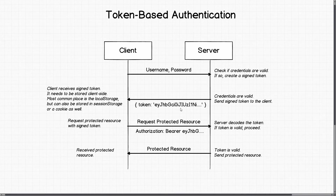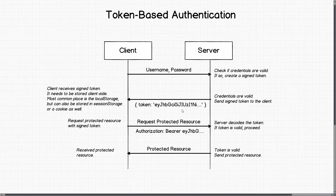With cookie-based authentication, the server places the cookie onto the browser via a specialized mechanism — no action is needed on the client side. But with token-based authentication, the server sends the signed token just as it would send any other data. The client must handle storing it, typically in local storage, though it can also be stored in session storage or even a cookie.